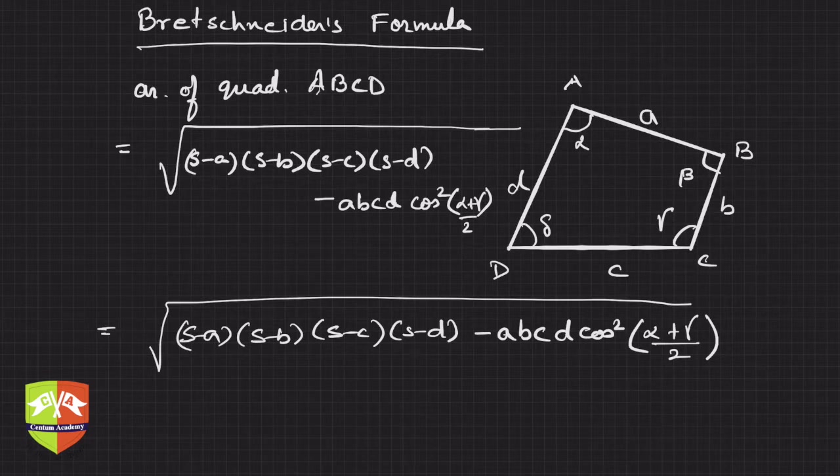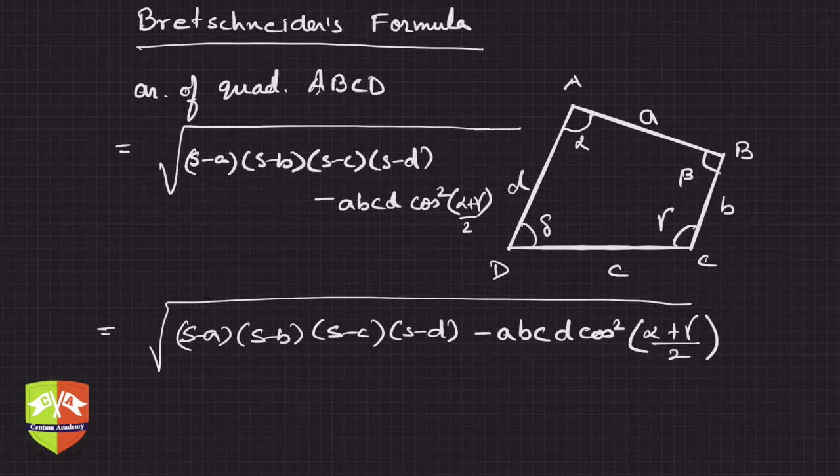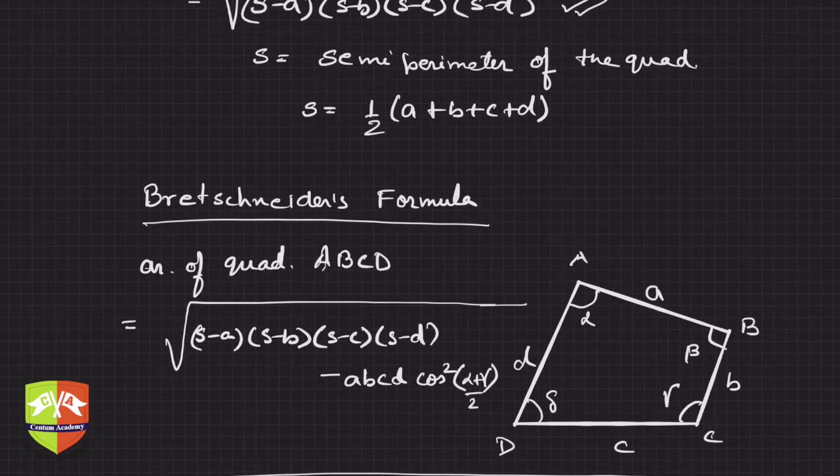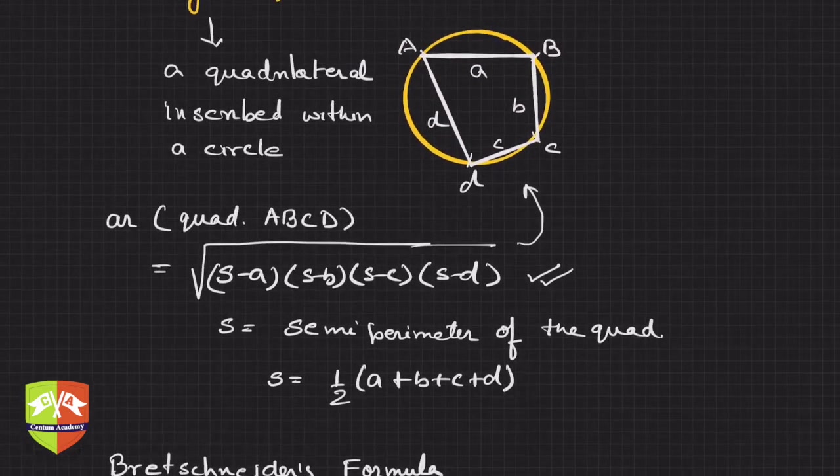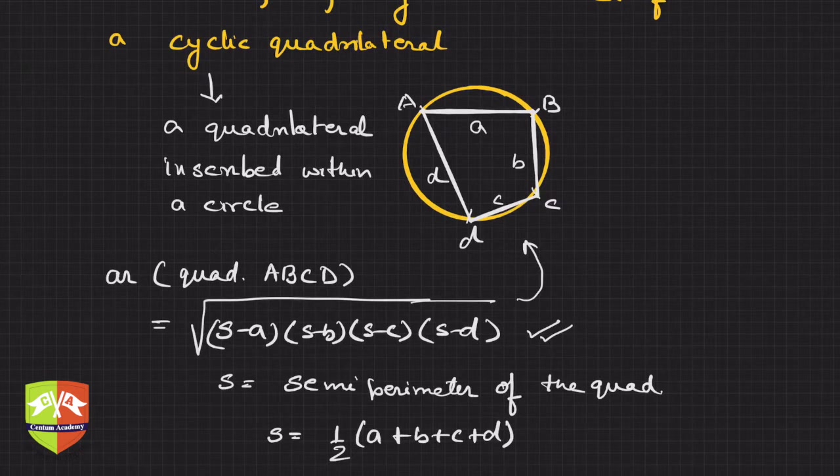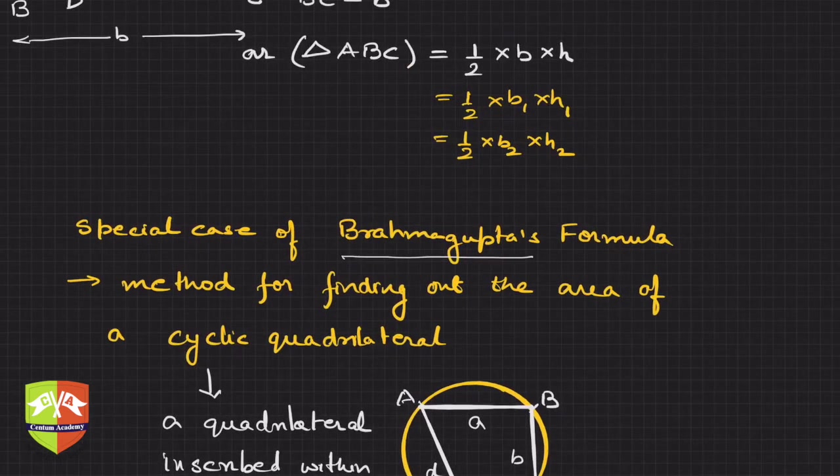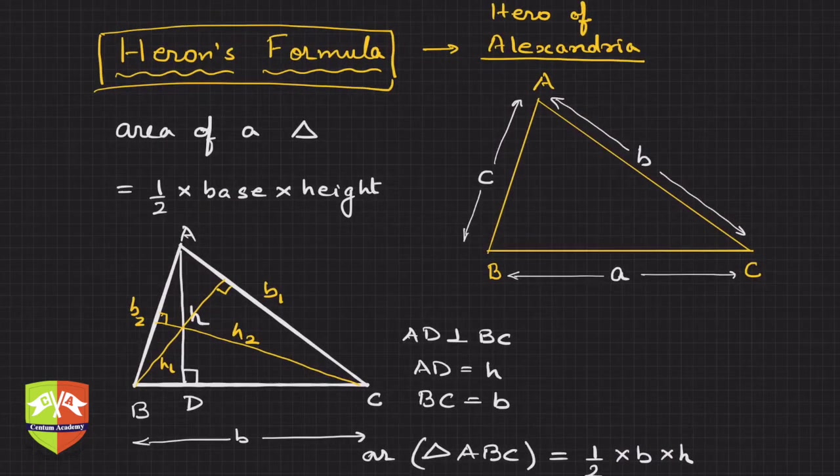This is just for your information. Bretschneider's formula was a general case of Brahmagupta's formula, and Brahmagupta's formula's one specific case is Heron's formula.